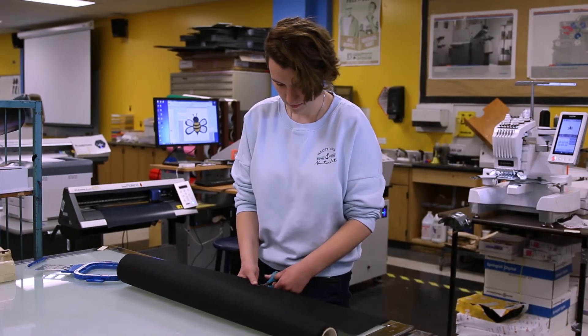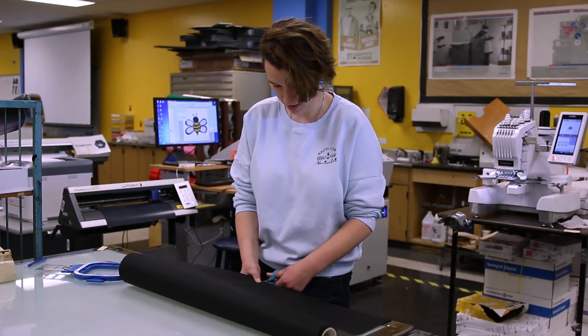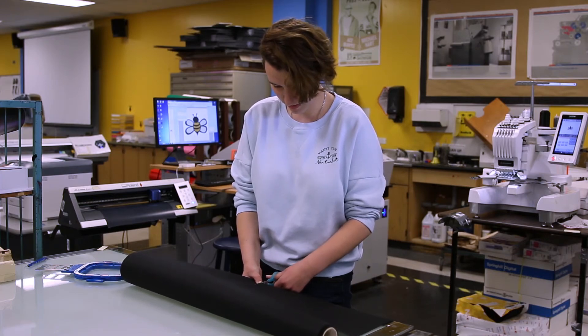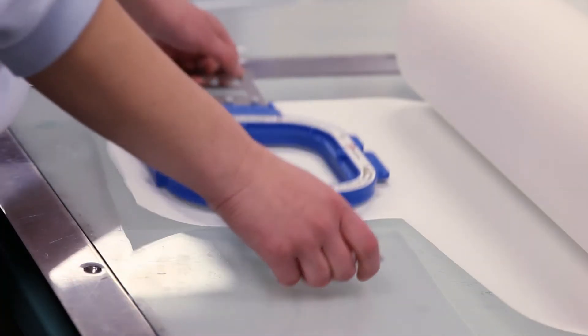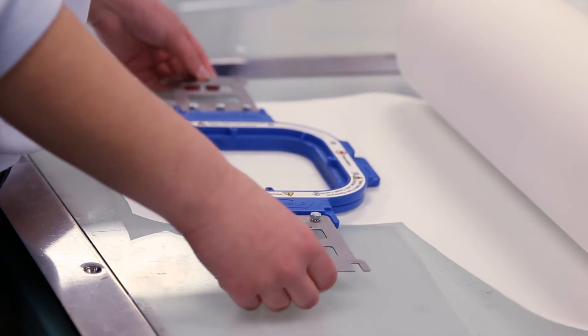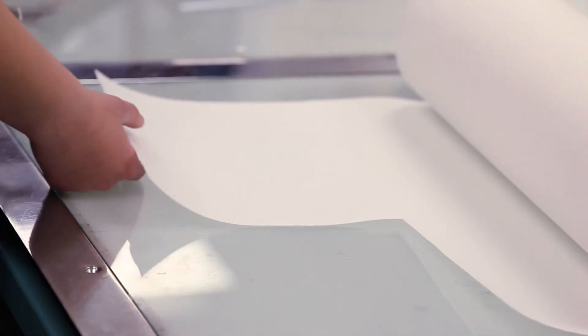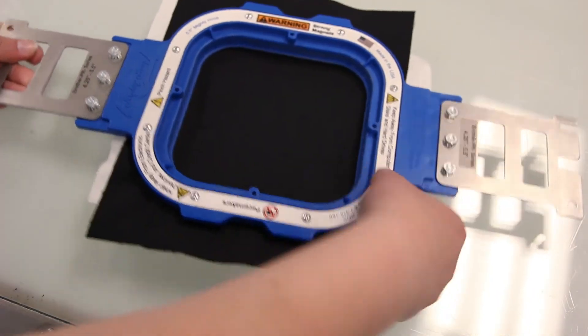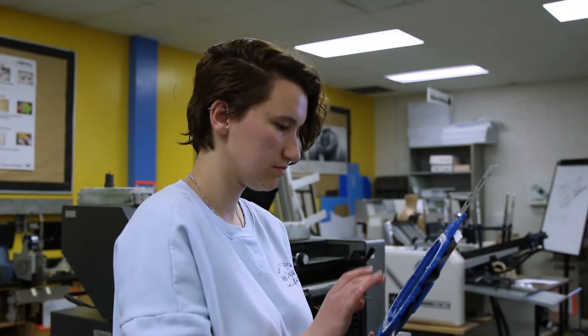Cut the fabric to fit your desired hoop and be aware of how much material you are using. Always use Tearaway to control the stability of the stitches. Place all the materials together on the hoop and make sure it has a taut fit.